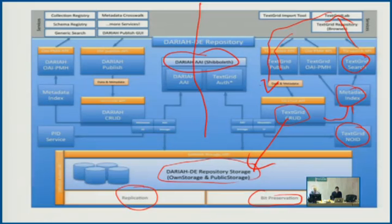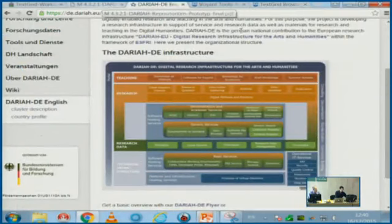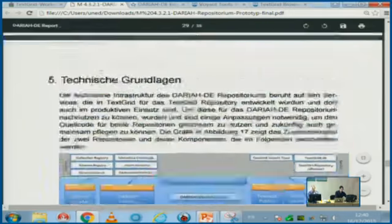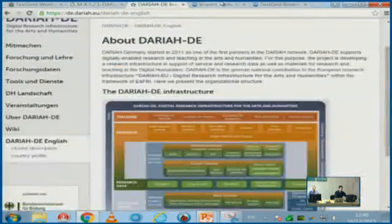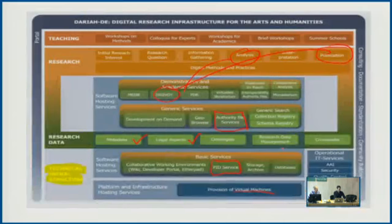Are there any more questions? We tried to answer the technical question about how this repository is built. There's a report available — if you ask Google for 'DARIAH-DE repository report,' you will probably find it as one of the first hits. We also brought some promotional material. There's a report about the DARIAH repository, but it's written in German. Many of the reports we created in the TextGrid project are available in English, especially those related to development — for example, a report describing the import process and different ways of getting data into TextGrid.